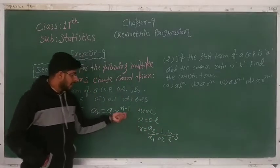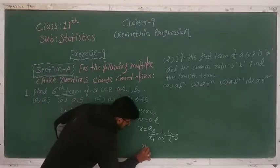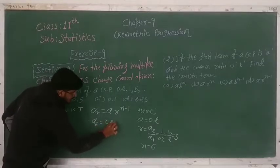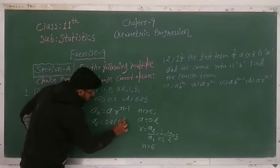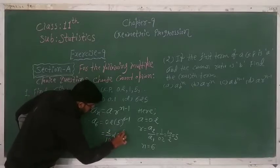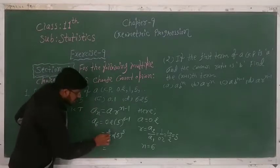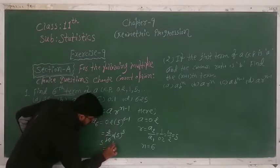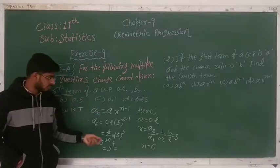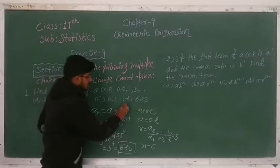Now put the values of a and r, and n = 6 to find the sixth term. So a6 = 0.2 × 5⁵ = (2/10) × 5⁵. Two fives cancel one factor of 5, giving (1/10) × 5⁵ = 5⁴ = 625. So the answer is D) 625.